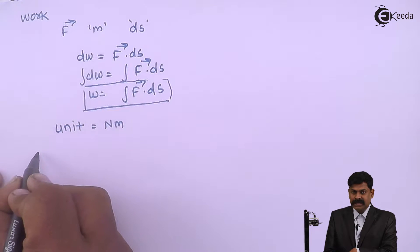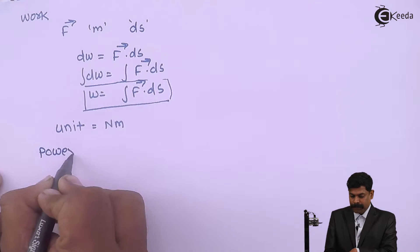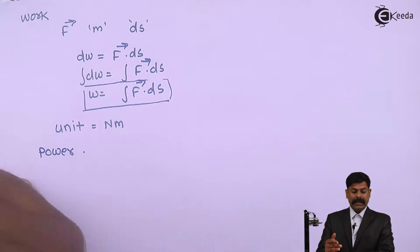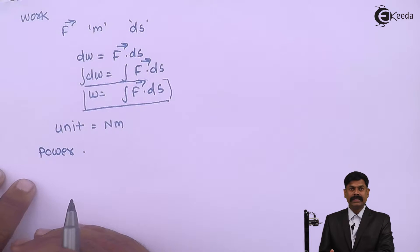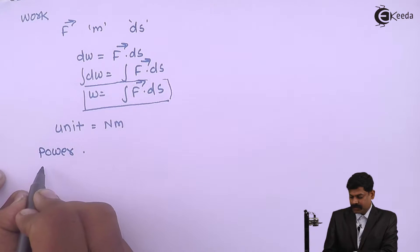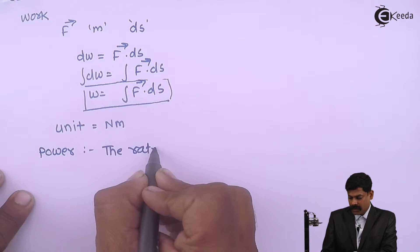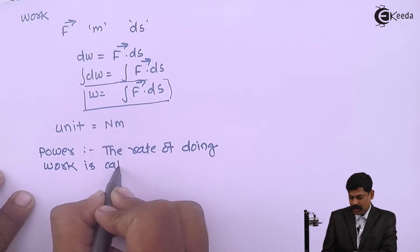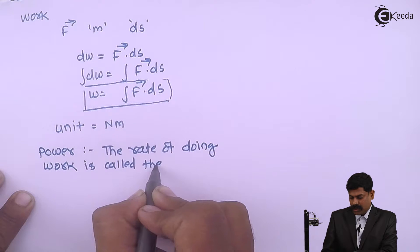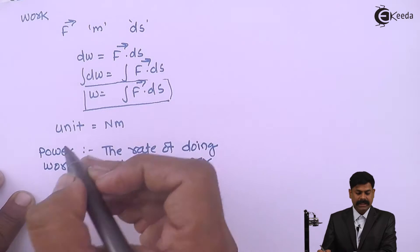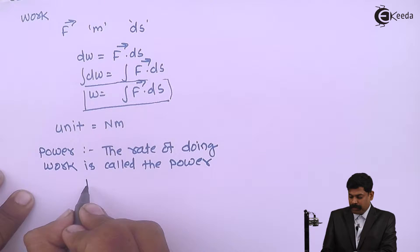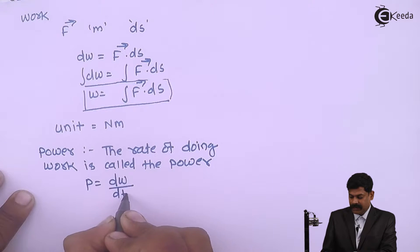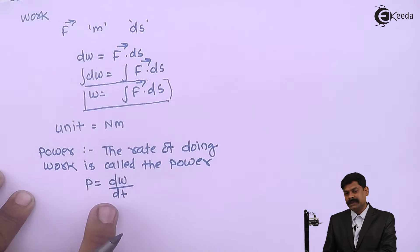The second definition is power. Now what is power? The rate of doing work is called power. This is the rate, therefore power P equals dW by dt. This is the rate of change of work.